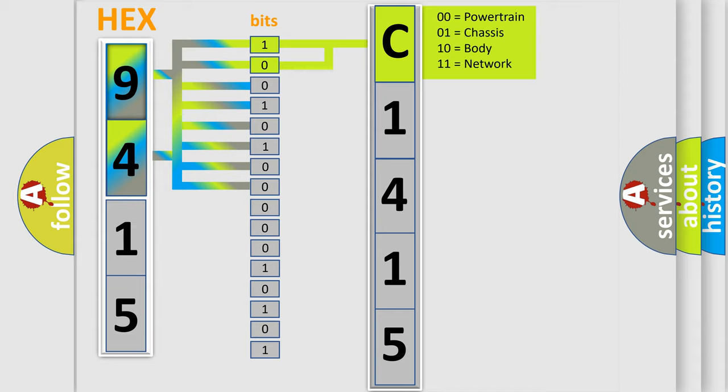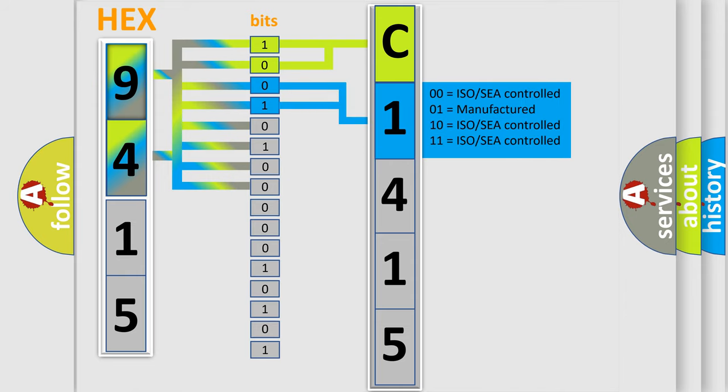By combining the first two bits, the basic character of the error code is expressed. The next two bits again determine the second character.